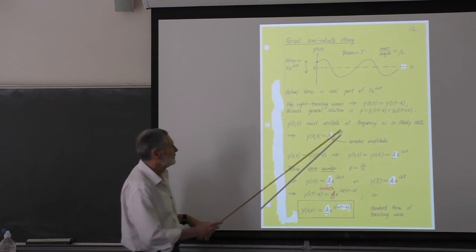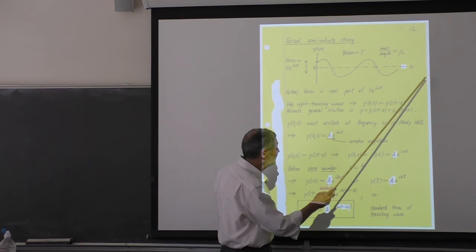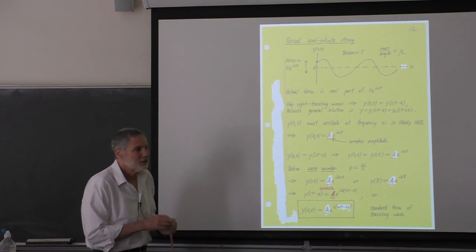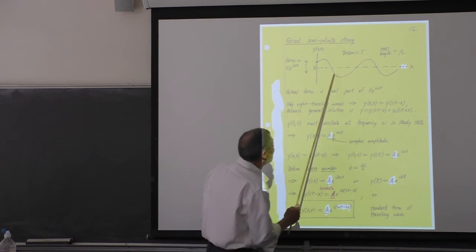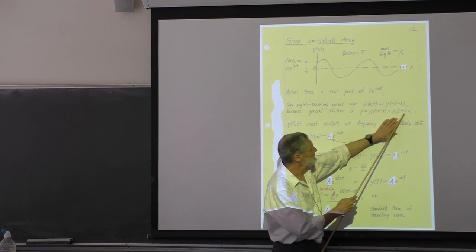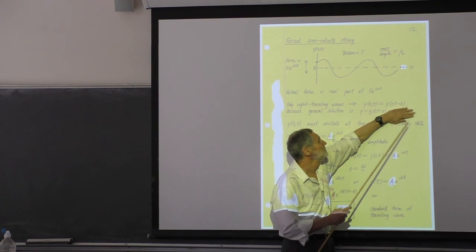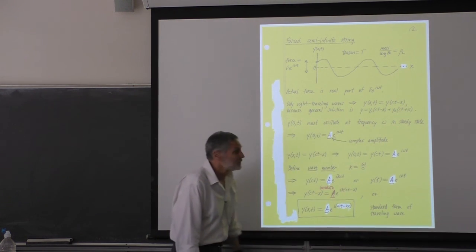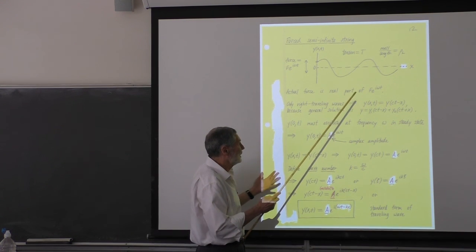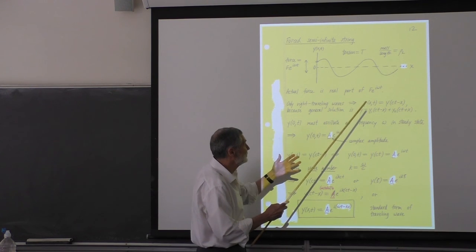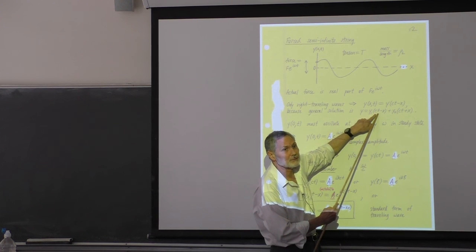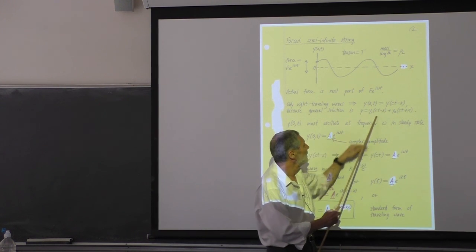An important point: there is an assumption here that there are no waves coming in from infinity, which is very reasonable, but it really should be stated. So we only have right-traveling waves. That means in our general solution we can kill the left-traveling wave term. So we know the solution is not a function of two arbitrary variables — it can only be a function of the combination ct minus x, a single variable. It's a big simplification.